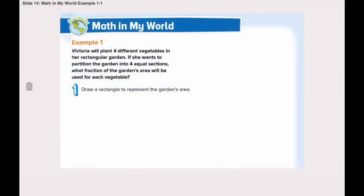Let's first go through example number one together. Victoria will plant four different vegetables in her rectangular garden. If she wants to partition the garden into four equal sections, what fraction of the garden's area will be used for each vegetable?